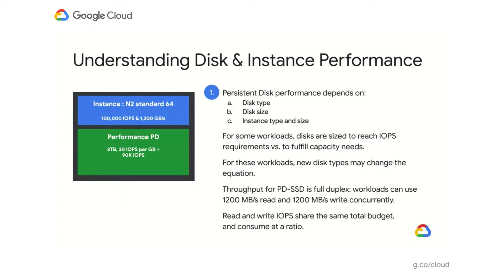If my workload benefits from having access to the full 100,000 IOPS, I could get there by increasing the size of the volume correspondingly. On the other hand, if I were to create a Balanced PD of the same size instead, the volume would have 18,000 IOPS. For some existing workloads, disks are sized to reach IOPS requirements versus fulfilling capacity needs. Especially if they are on PD standard disks, the introduction of Balanced PD might change the equation. Throughput for Performance PD and Balanced PD is full duplex — workloads can use 1,200 megabytes read and 1,200 megabytes write concurrently. However, IOPS pull from the same budget, so read IOPS plus write IOPS hit the same 100,000 or 80,000 limit for Performance PD or Balanced PD respectively.